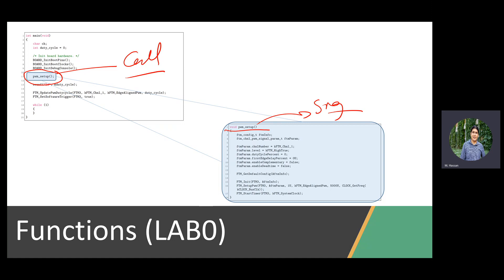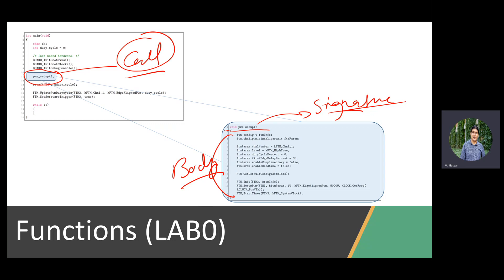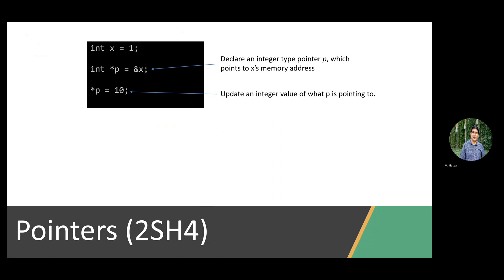Here is an example of a function definition. A function call, a function signature — which is basically the name of the function, what it returns, and the list of input parameters — and the function body or implementation. These are the three main components of a function. In C, you cannot use a function before you define it or at least add its signature or prototype before the main — it should be visible. Otherwise your IDE will complain.